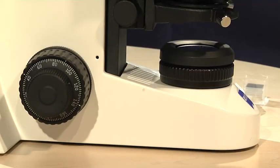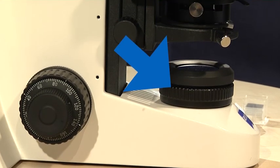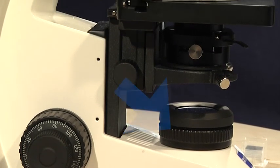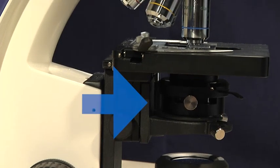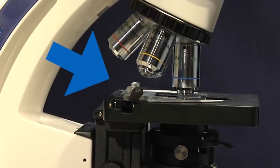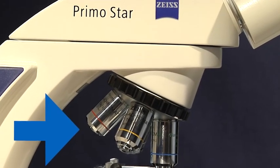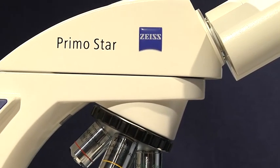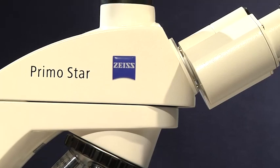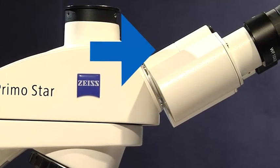Following the light path, the compound microscope is composed of the light source, the condenser, the specimen stage, the objective revolver with various objectives, and the eyepieces or oculars.